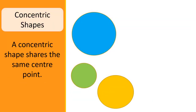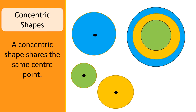Concentric circles share the same centre point. These circles are not concentric as they have different centre points. These circles, however, all share the same centre point — these are concentric circles.